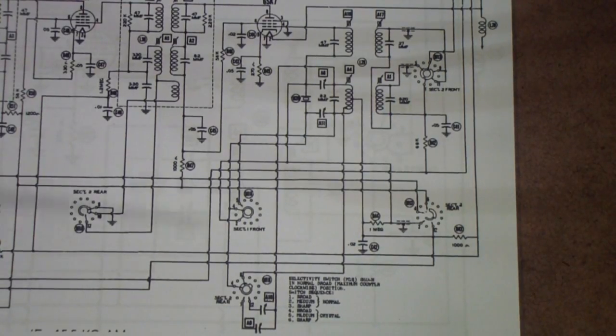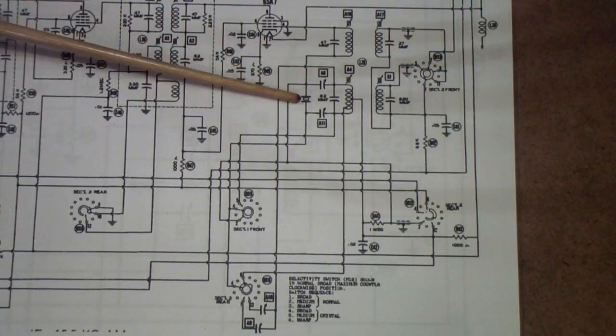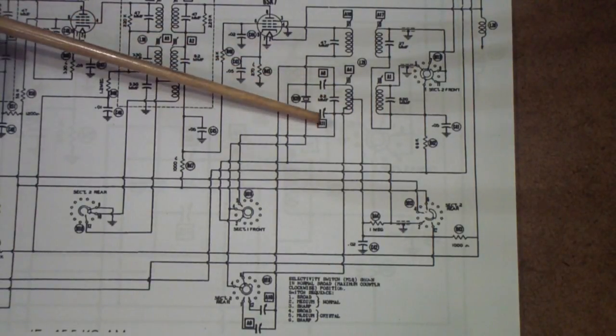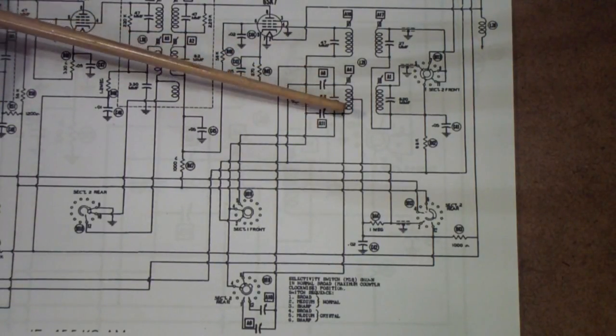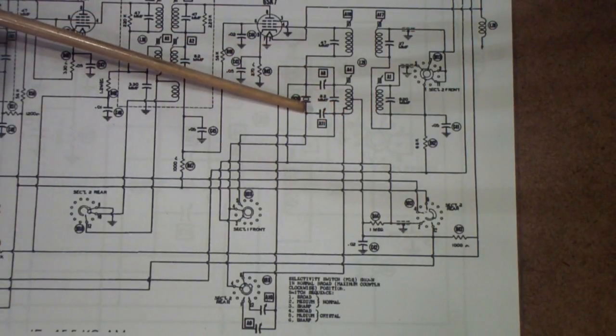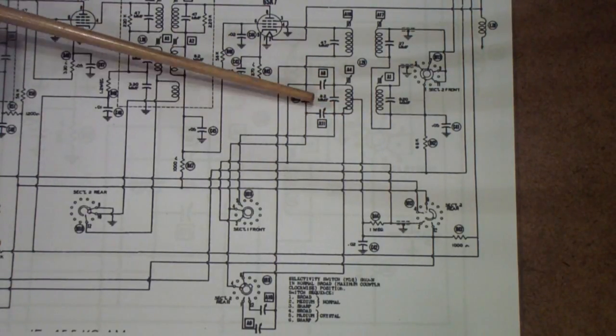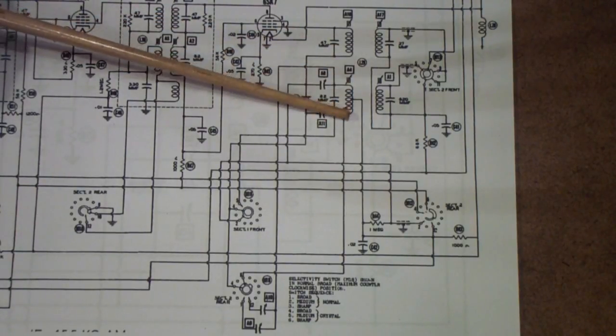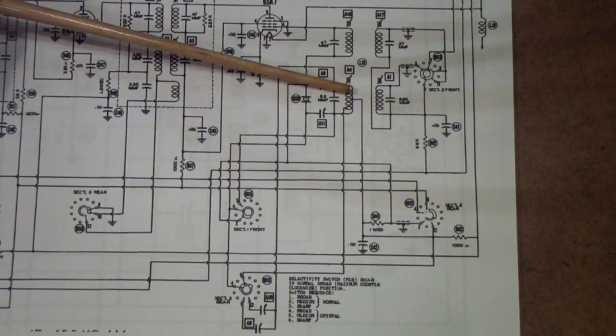Here is the schematic of the SX-62. This is the 6SK7. Here is the crystal itself, and you'll notice that it has a coil and some capacitors that surround it that need to be adjusted.